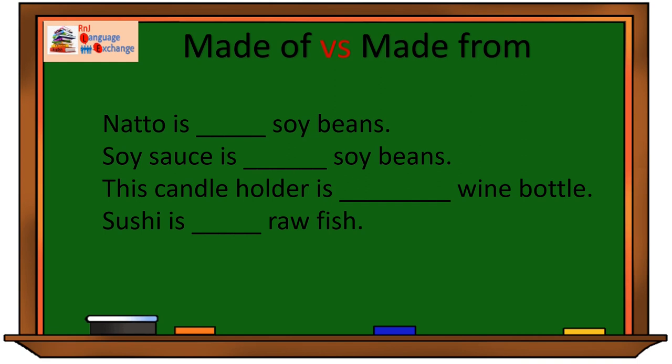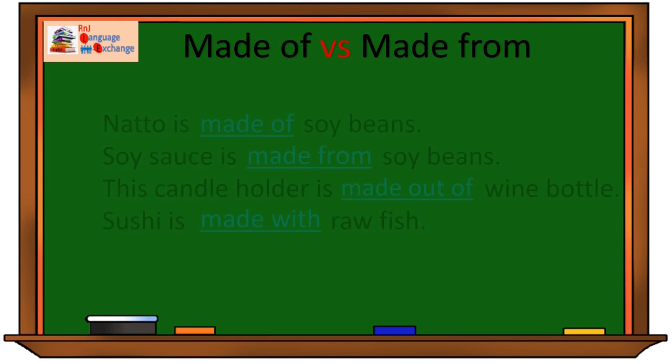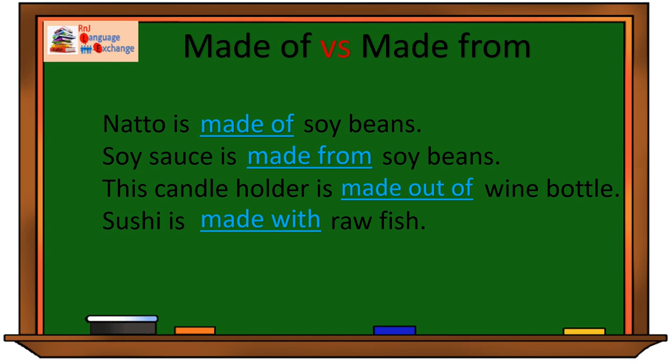Alright, time's up. Let's see how well you did. Natto is made of soybeans. Soy sauce is made from soybeans. This candle holder is made out of wine bottle. Sushi is made with raw fish.